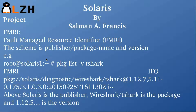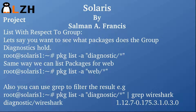FMRI stands for Fault Management Resource Identifier. It is a scheme containing a publisher, a package name, and a version. For example, 'pkg list -v tshark' gave us the FMRI where Solaris is the publisher, Wireshark is the package, and 1.12 is the version.